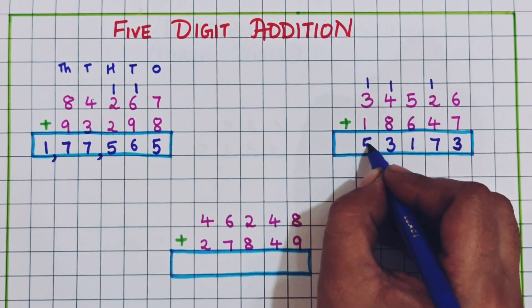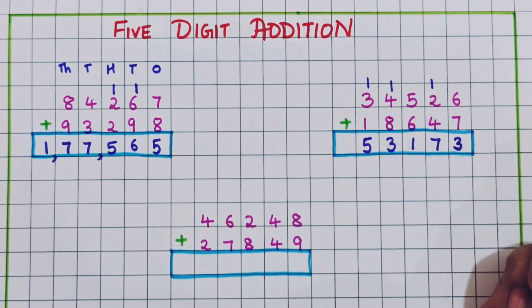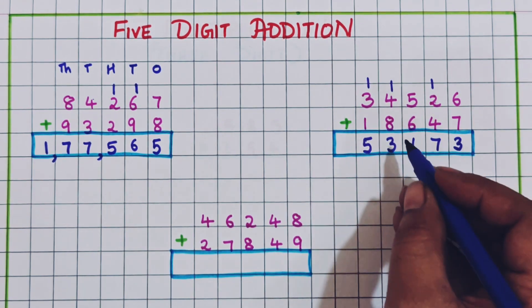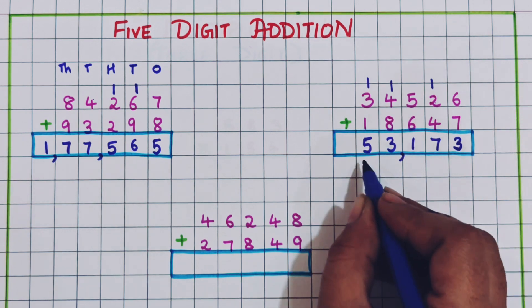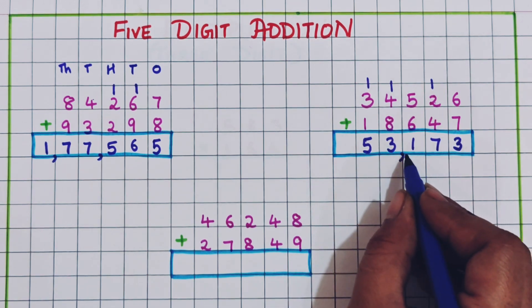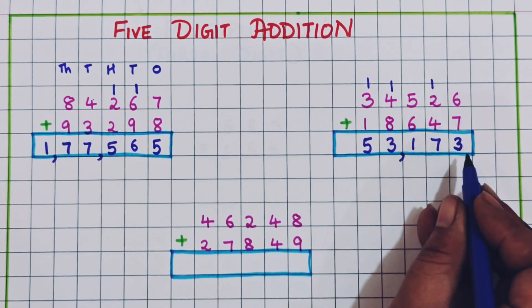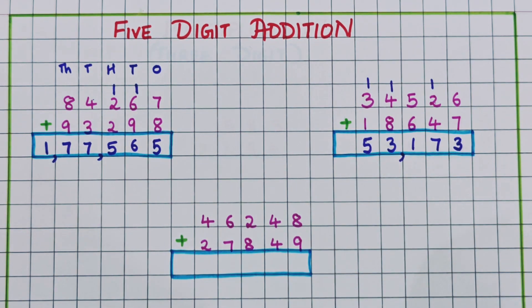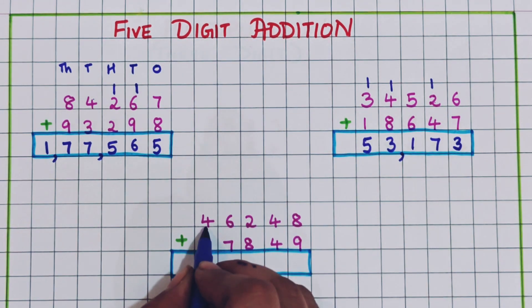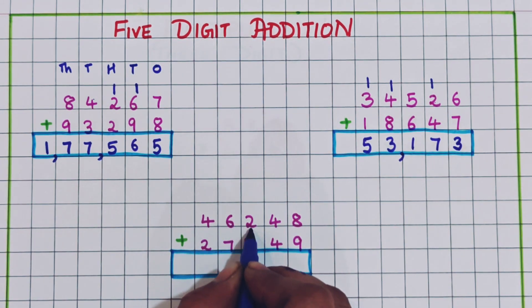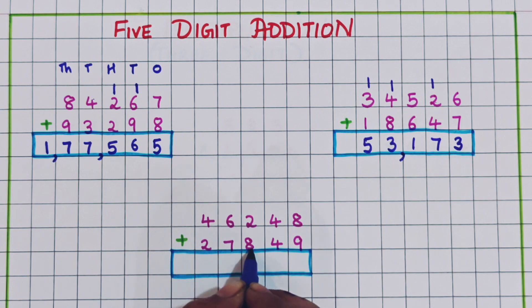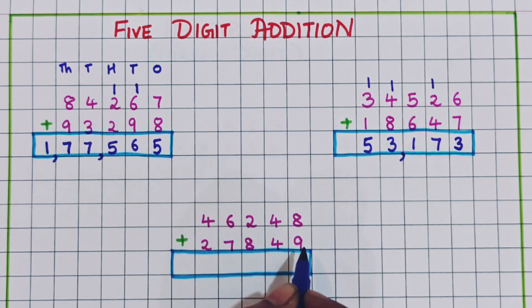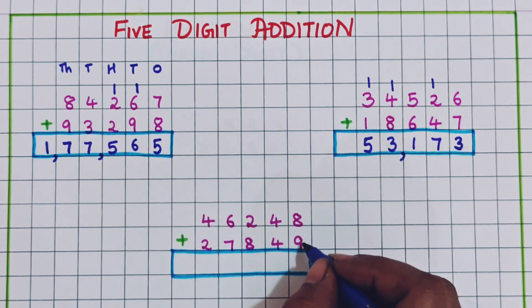Now 3 plus 1 is 4, plus 1 is 5. Let's place a comma after the first three digits. The answer is 53,173.